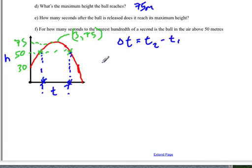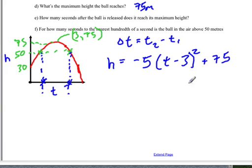We're given the original equation from part A is the one we're going to use here. H is equal to negative 5(T minus 3)² plus 75. What we're going to do is sub in 50 meters, because that's what we want to know. We want to know the two times when the ball is at 50 meters.